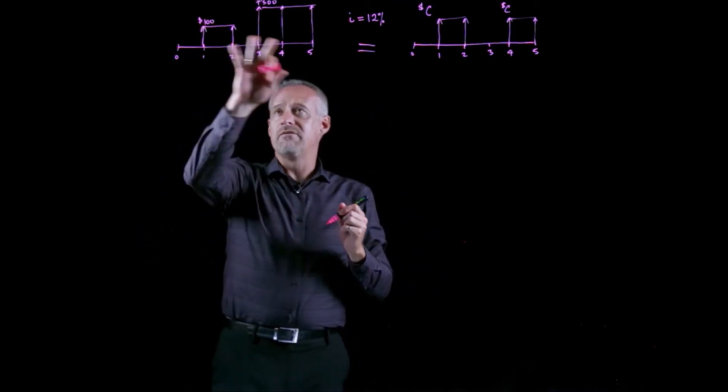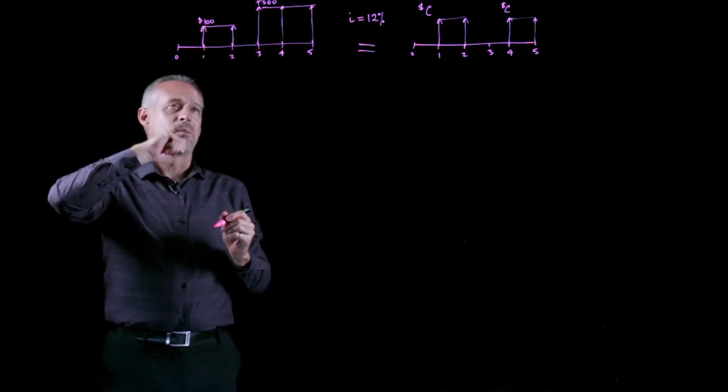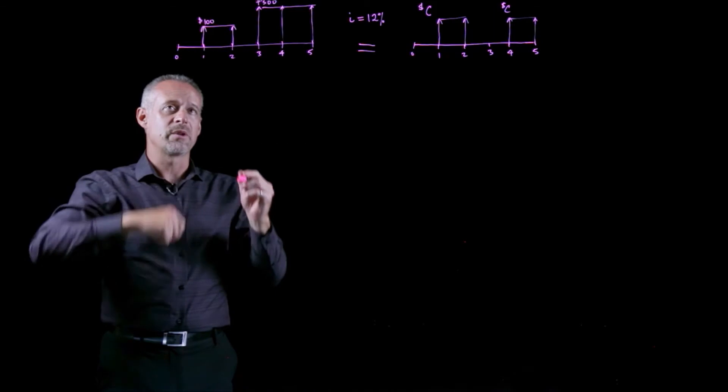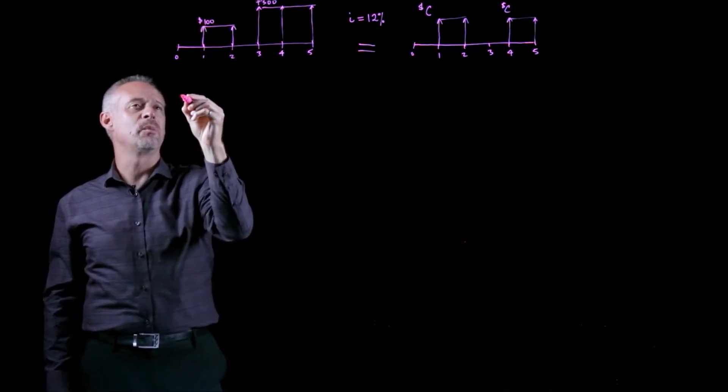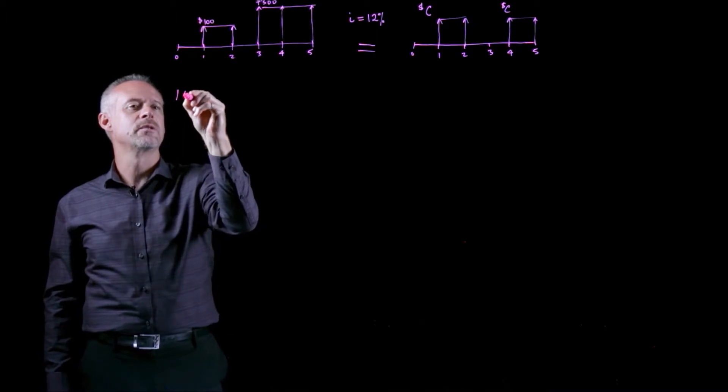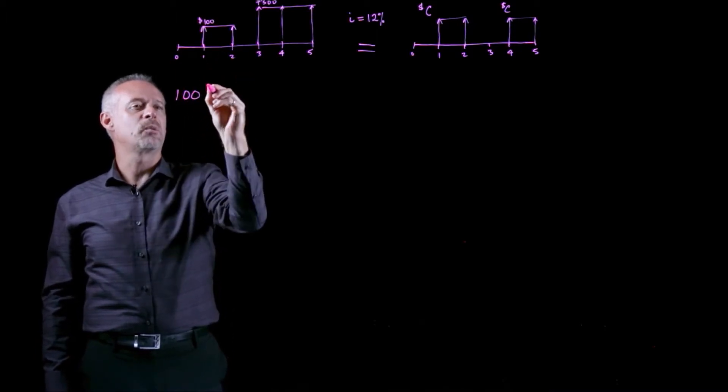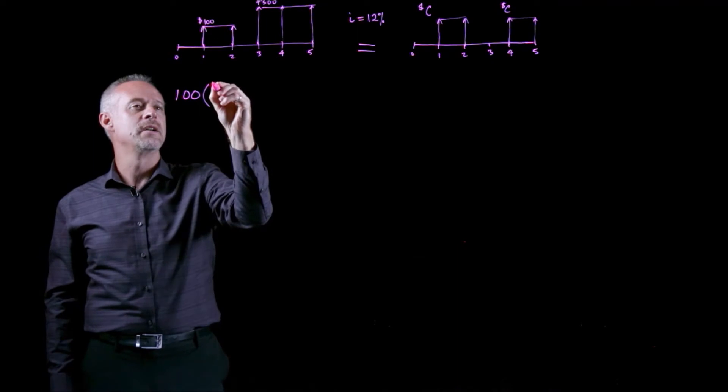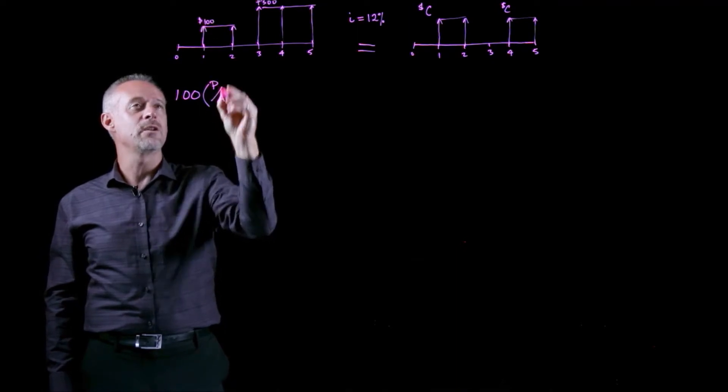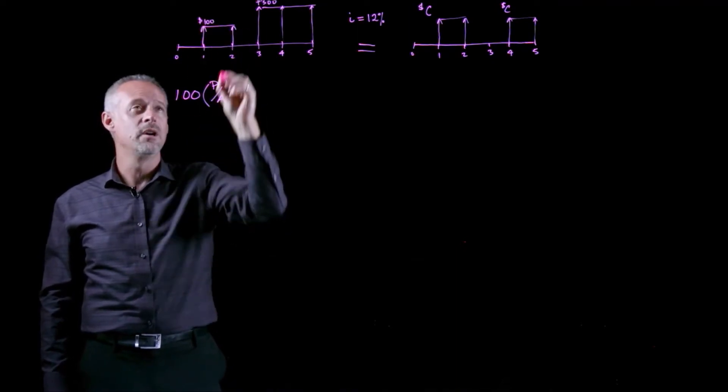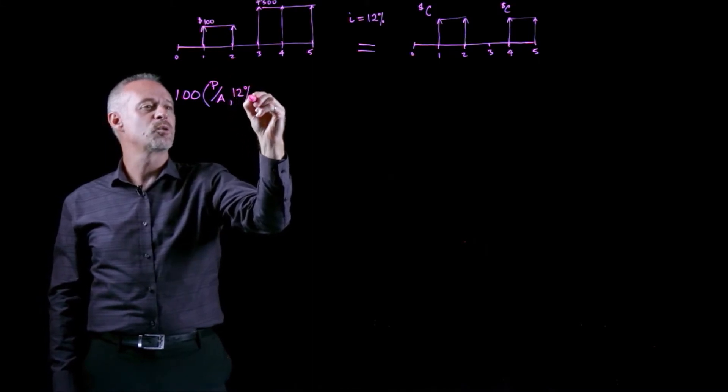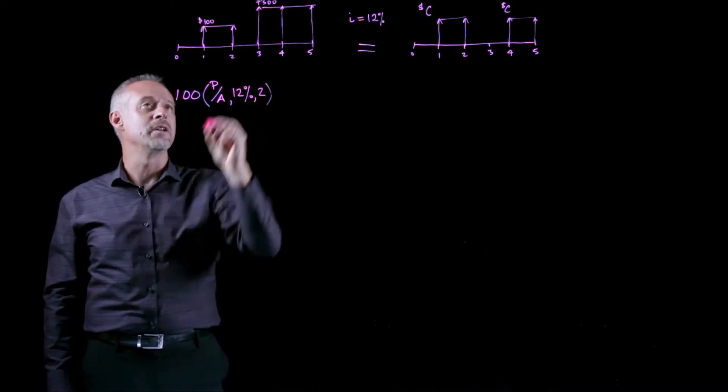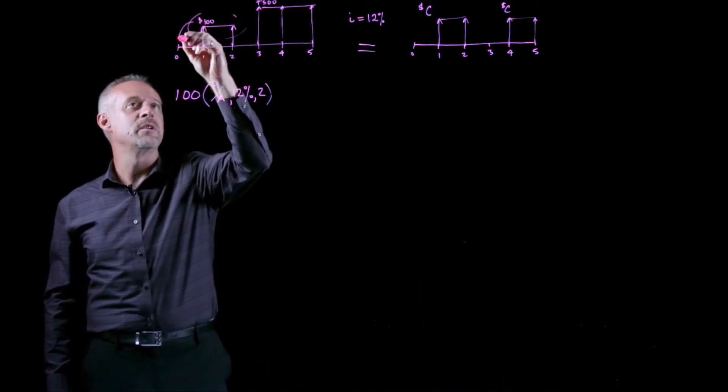So if I convert these cash flows back to the present, it would look something like this. First, let's look at these two $100 payments. The $100, moving it back to the present, I would multiply by the P given A. We're going to assume that this is an annuity over two periods. The P given A for 12% and two periods. So that moves these payments to here.